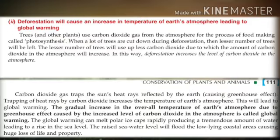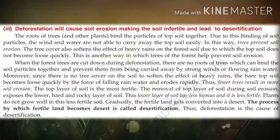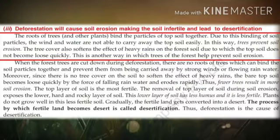In the next part of the video we will learn the consequences of deforestation — how it causes desertification, flooding, and droughts, and also how deforestation leads to the extinction of many wild animals and plants. Now let us discuss the third consequence: deforestation will cause soil erosion, making the soil infertile and leading to desertification.